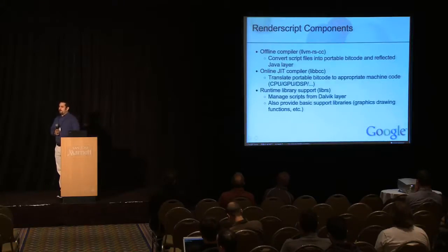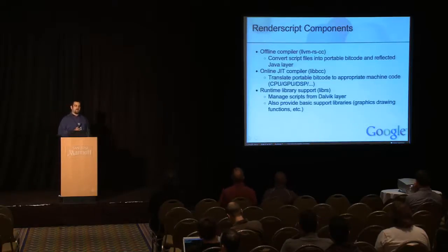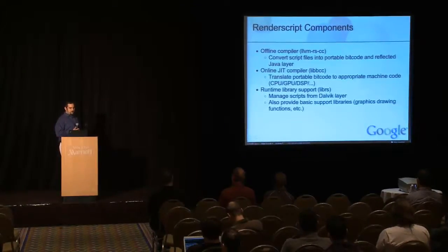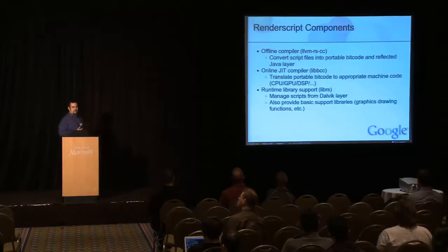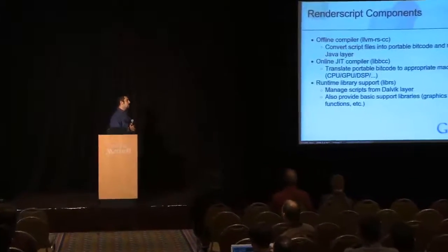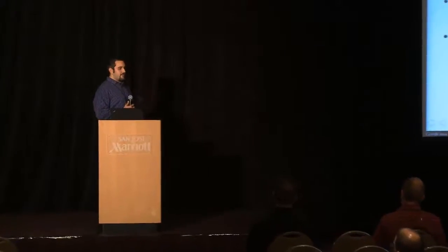There are three things that make up all of RenderScript. We have an offline compiler that converts our RenderScript source language into a portable bitcode file as well as reflected Java files — actually one-to-many reflected Java files. There's an online JIT compiler called libbcc that runs on the device and does the conversion from bitcode to machine code — this is the part that most partners will provide their own version of to target different CPU and GPU combinations or DSPs. There's also runtime library support where all the script management takes place and where communication from the Dalvik side comes from, plus support libraries like graphics drawing functions mostly implemented using GLES.